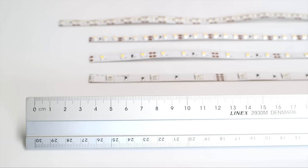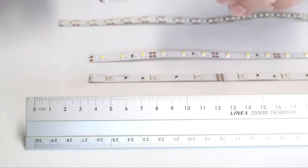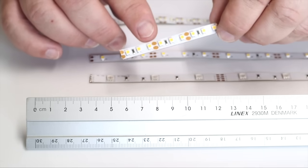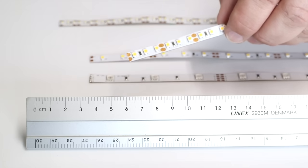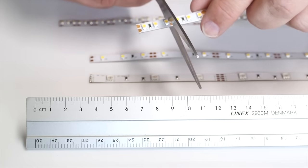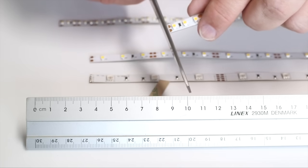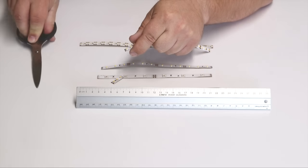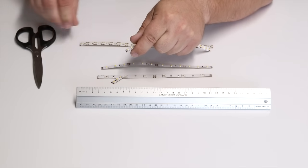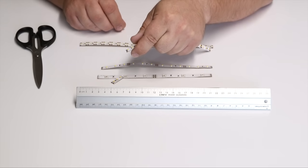Once you have found the cut line marked on the LED strip, simply use the scissors to cut directly along the line as demonstrated here. It's important to note that LED strip must only be cut at the specified marks. Cutting the strip in the wrong place will result in some of the LEDs in the cut area not working.